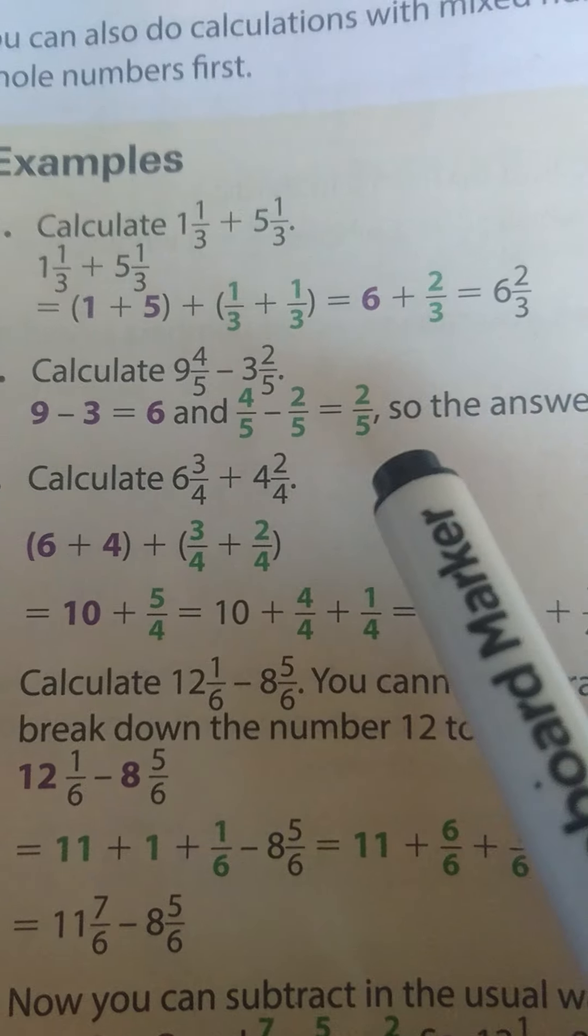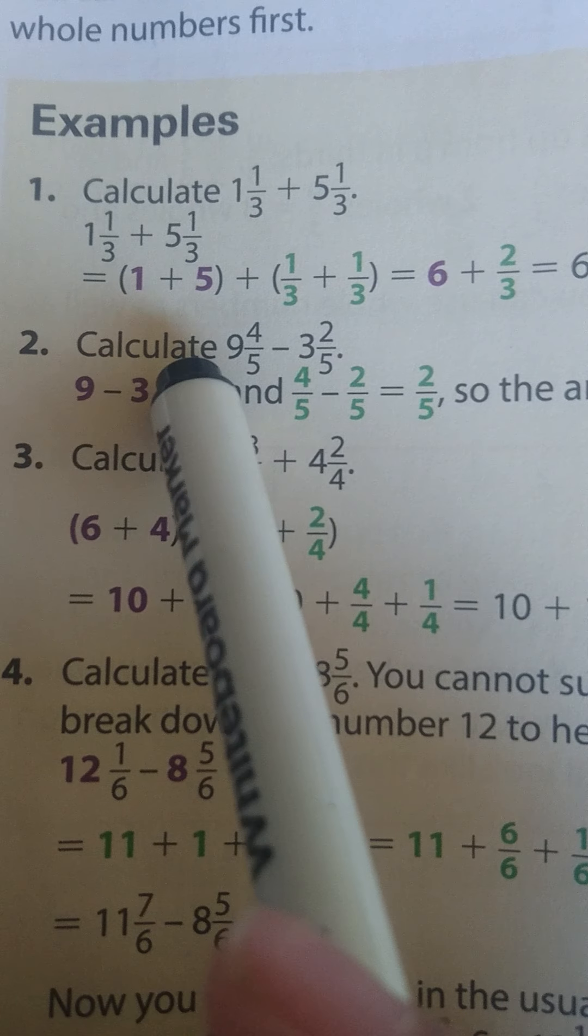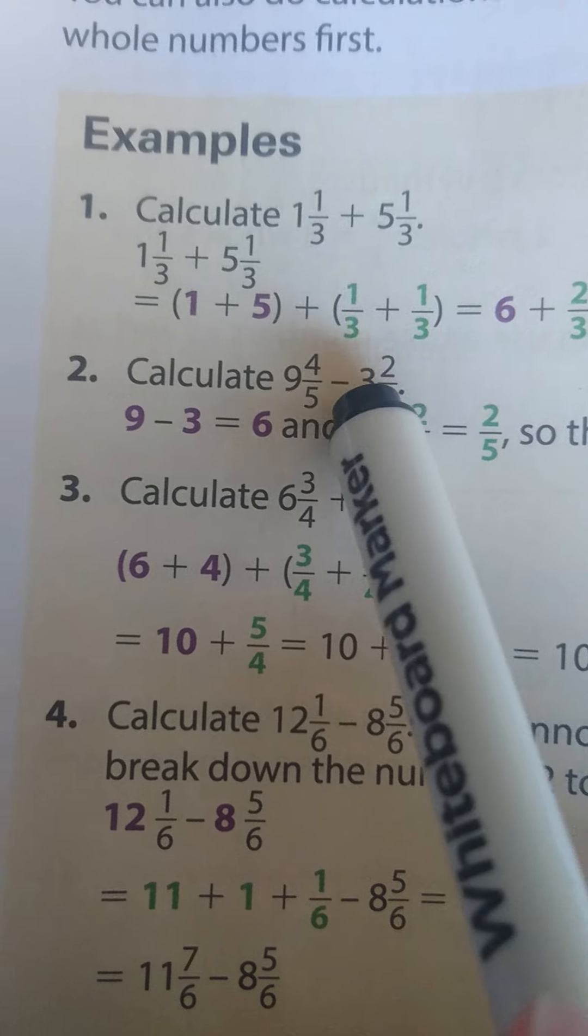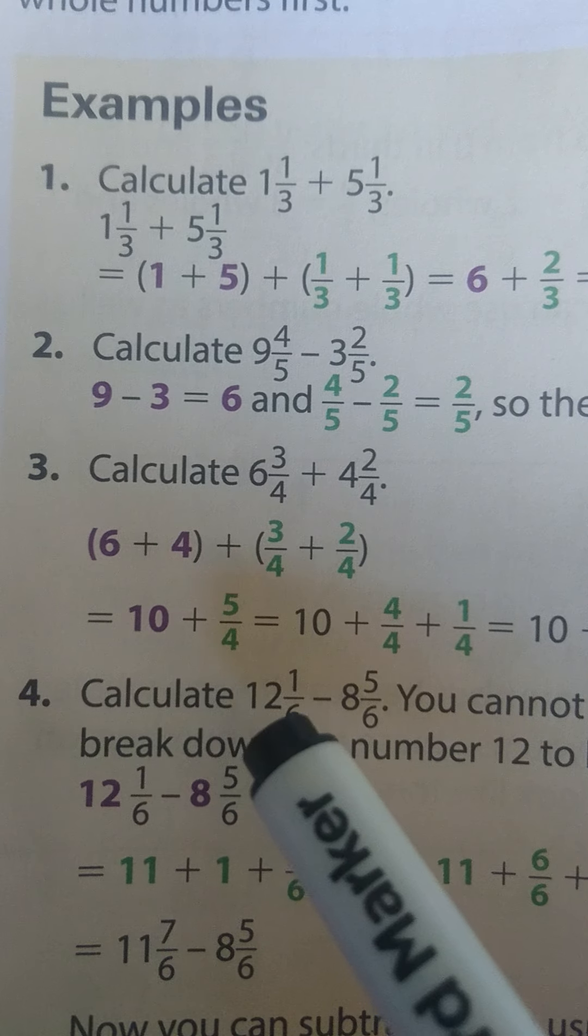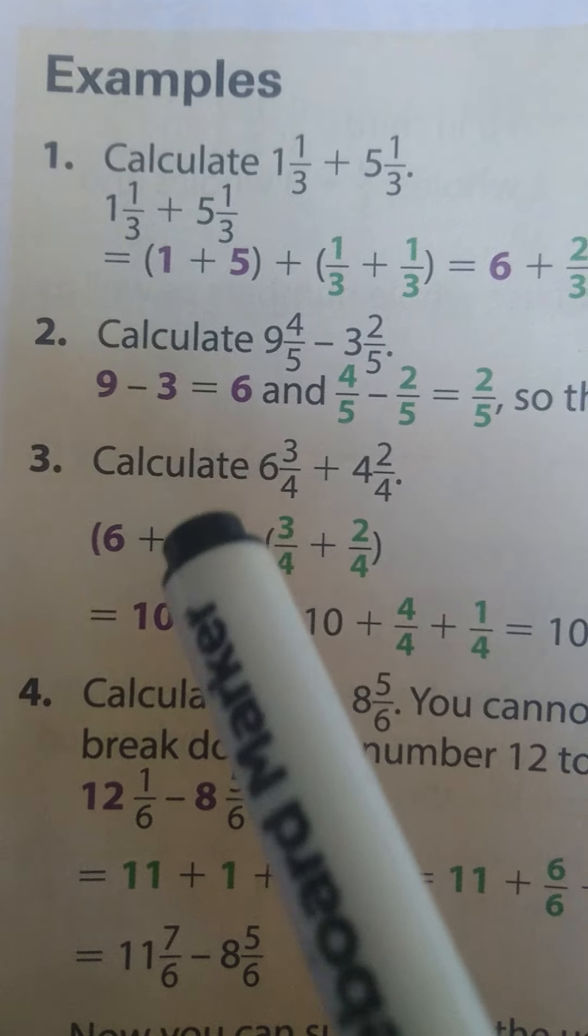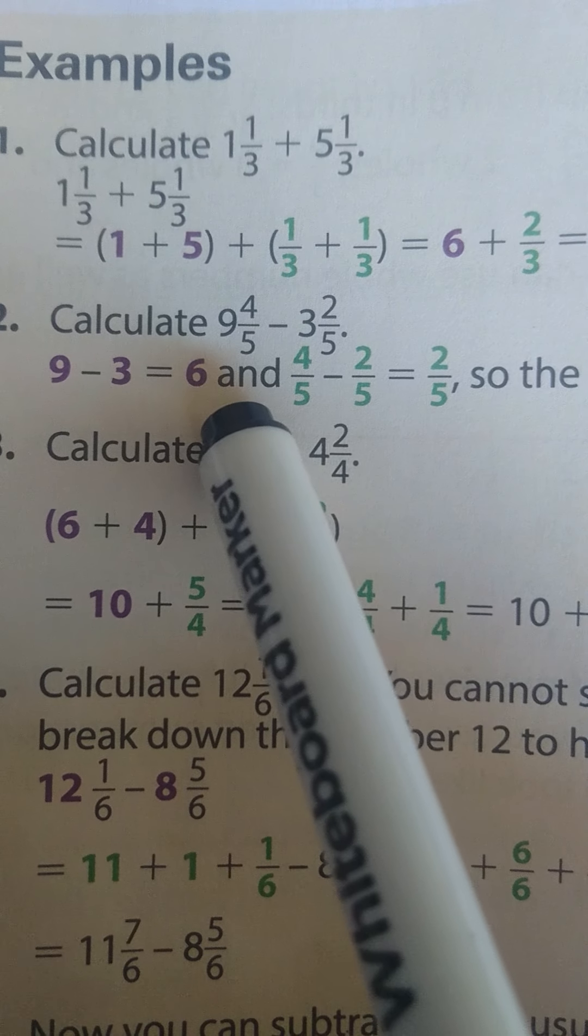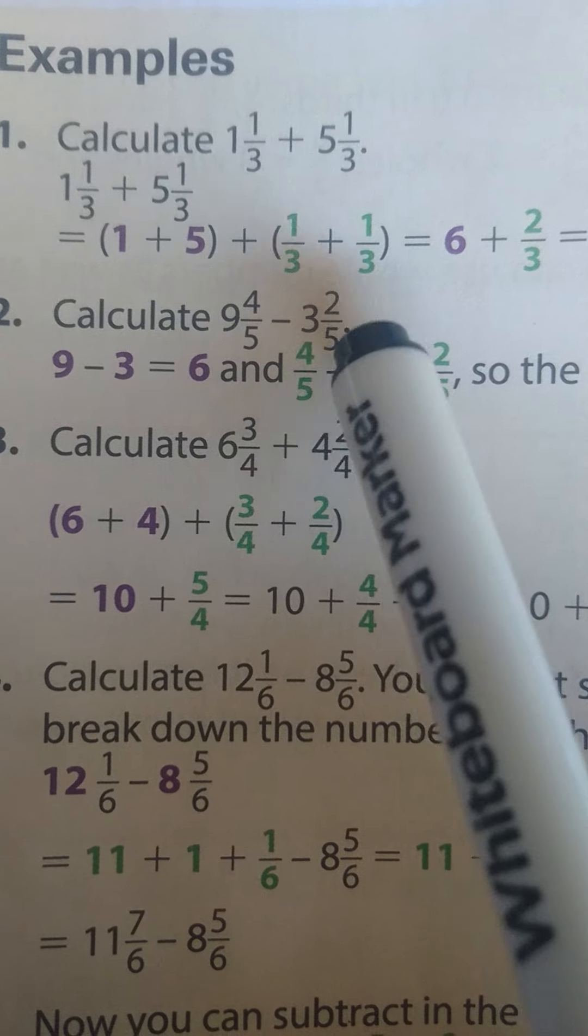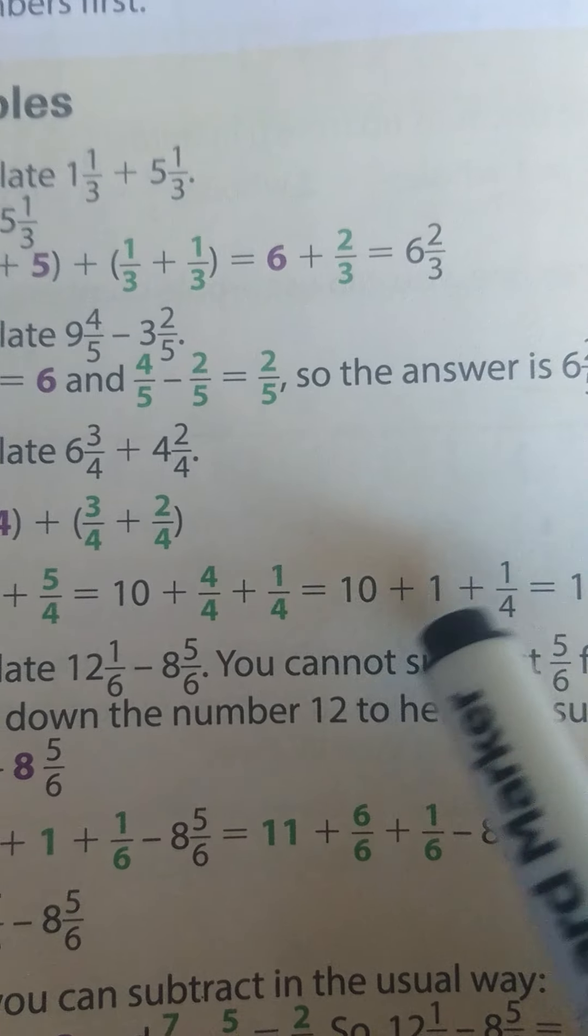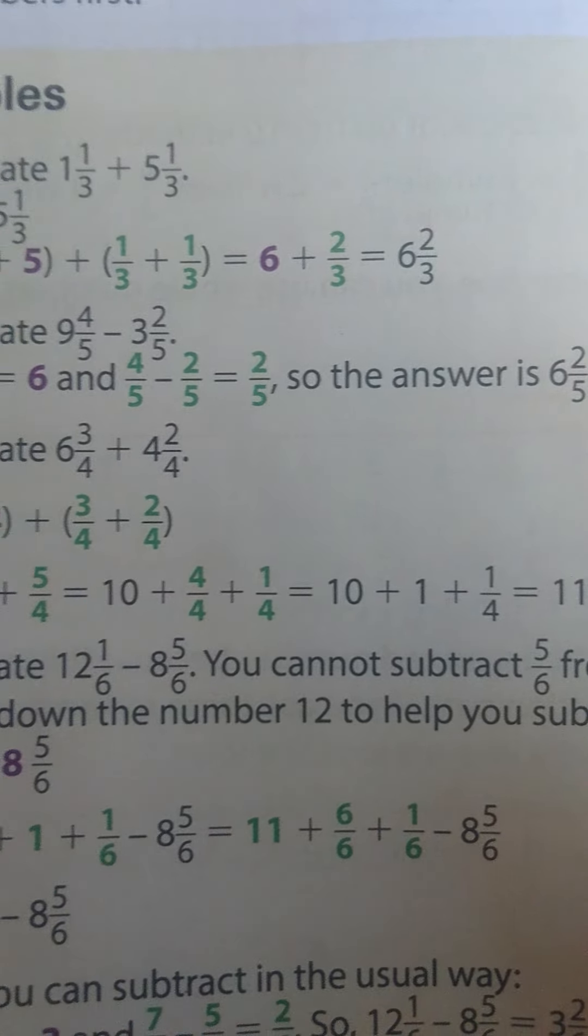Let's look at the next example. It says calculate 9⅘ - 3⅖. So let's begin with our whole numbers. 9 - 3 = 6. And ⅘ - ⅖ will give us ⅖. So the answer is 6⅖.